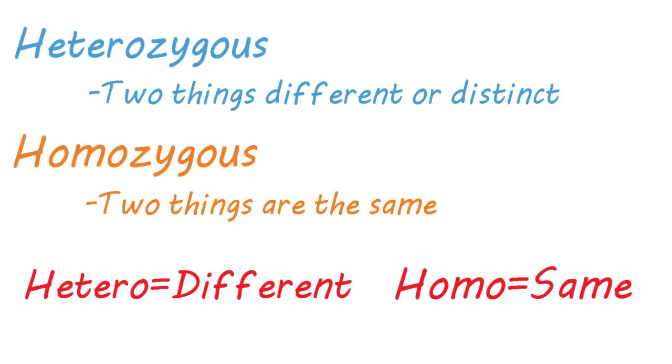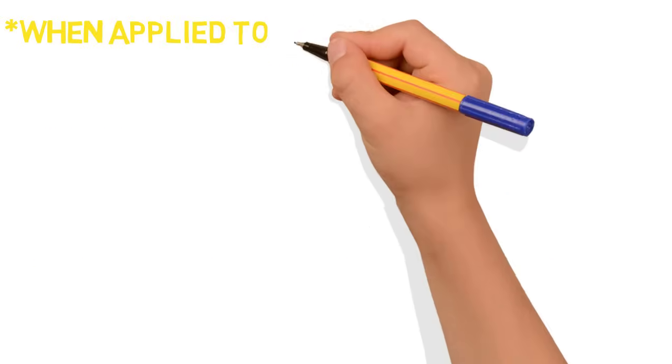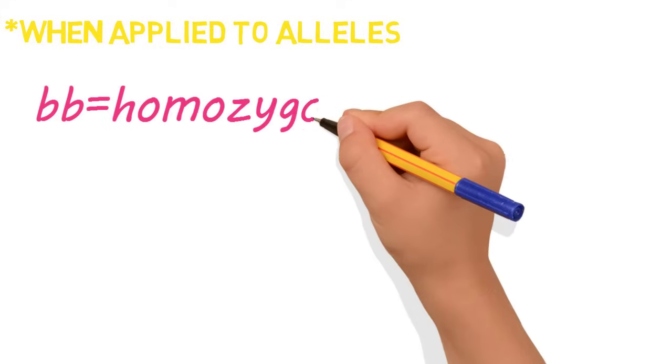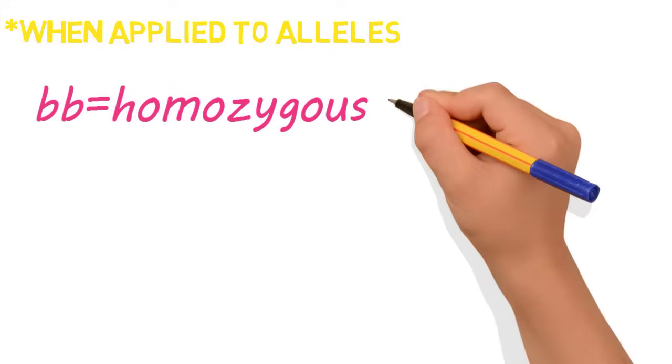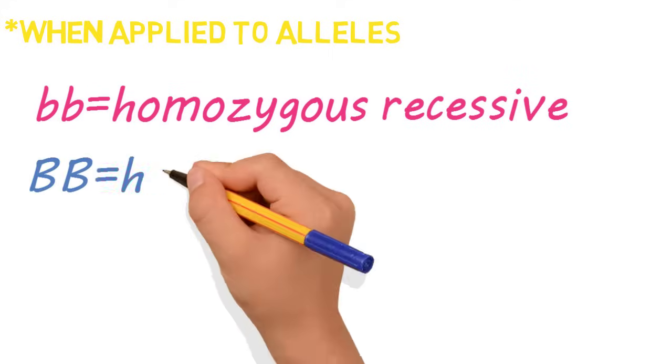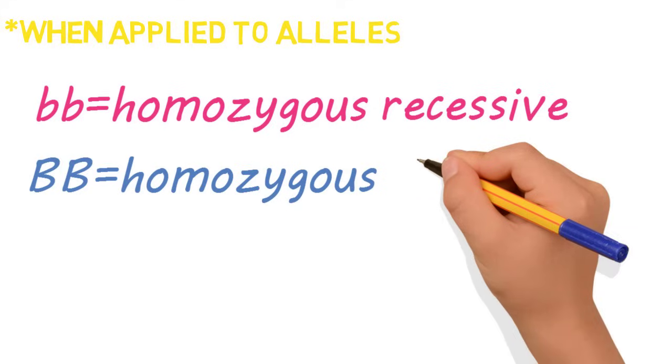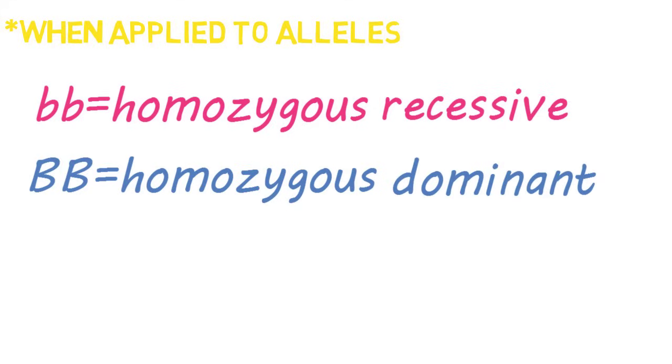The same is true when referring to alleles. Using letters to represent alleles and referring to the most taught case of dominant versus recessive alleles, two lowercase letters, such as little b, little b, would be a homozygous set of alleles — in this case, homozygous recessive. Big B, big B, would also be homozygous, but would be homozygous dominant because it's the dominant allele.